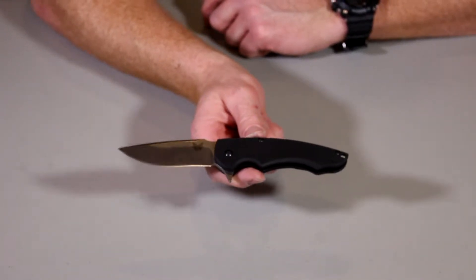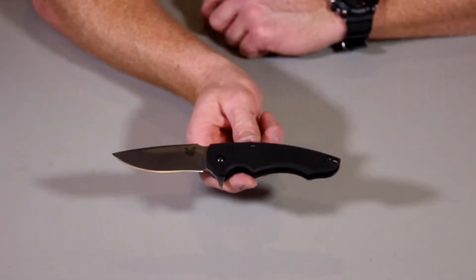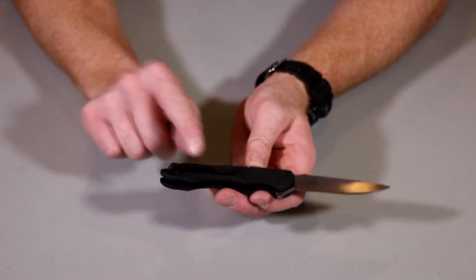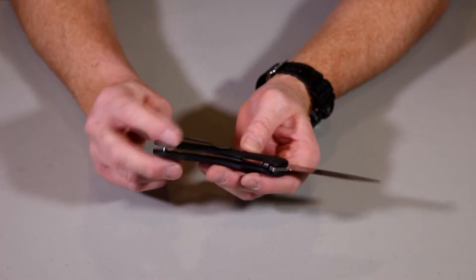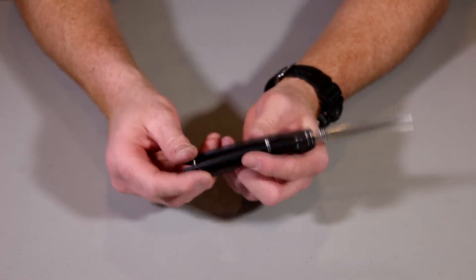The blade length is 3.3 inches. And the overall length is 7.78. So very very nice size for everyday carry. It's got a nice clip on it. So it's going to be tip down. And it's ambidextrous.